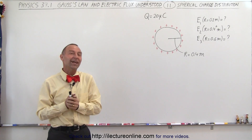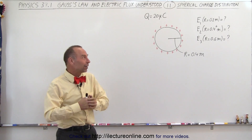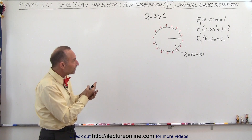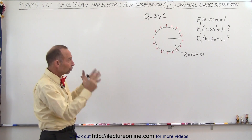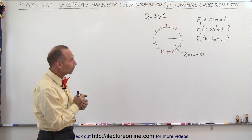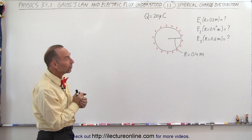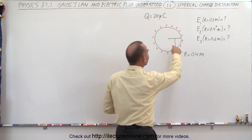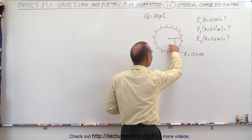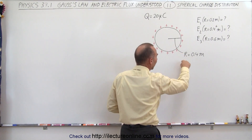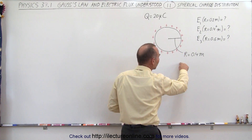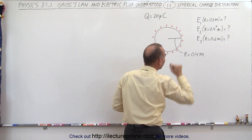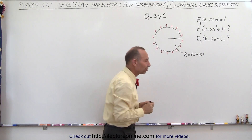Welcome to ElectronLine. Here we have a spherical conductor that has 20 microcoulombs of charge on the surface. The radius of the conductor is 0.4 meters, and we're trying to find the electric field inside the conductor, just outside the surface, and a small distance away — at radii of 0.2, 0.4, and 0.6 meters from the center.